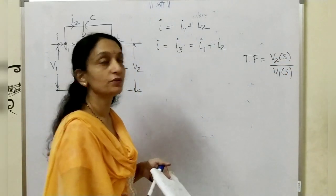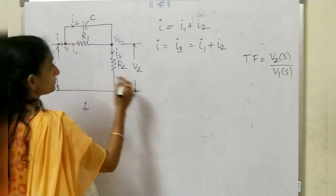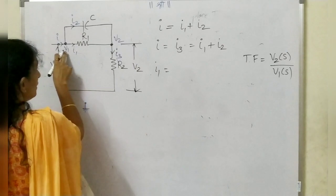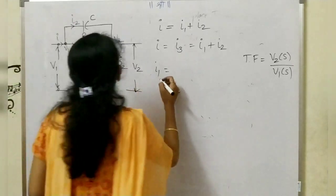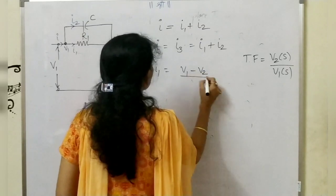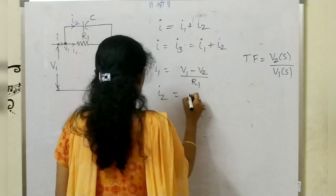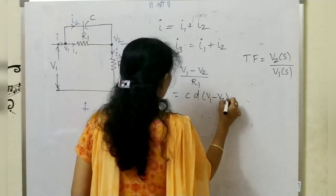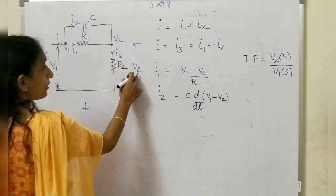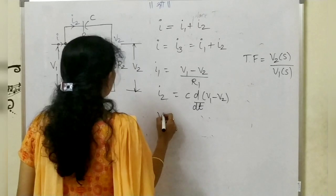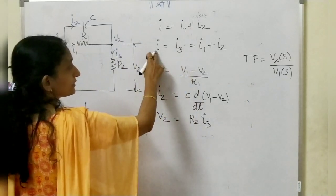We need to find equations for V1 and V2. Applying KCL: I1 equals (V1 minus V2)/R1, assuming V1 is at higher potential. I2 equals C·d(V1 minus V2)/dt. For V2: V2 equals R2·I3, and since I3 equals I, we get V2 equals R2·I.